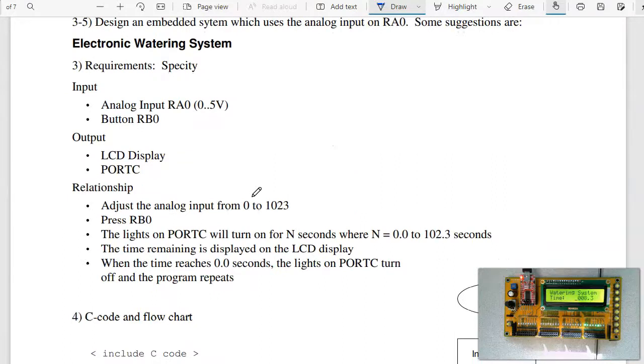Problem three is do something with the analog input. What I chose was a watering system. What I want to do is have the analog input specify the time that I'm going to change the water between 0 and 102 seconds and button RB0. When I press RB0, it takes the analog reading, interprets that as 0 to 102.3 seconds, turns on port C for that much time, displaying the times it counts down every 0.1 second. When it gets to 0, then waits for the RB0 for the new reading.